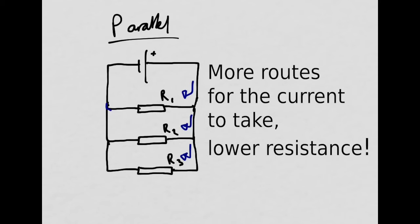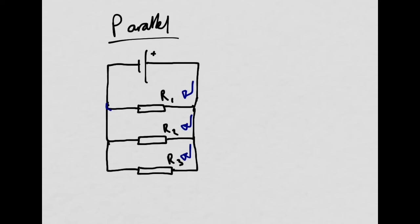That's quite tricky to get your head round, but think about it this way — there are more routes for the electricity to take. Imagine a main road with lots of cars travelling through it, and you decide to open up a bypass. That's exactly what we're doing here: opening up another route for the electrons to take. Therefore you can get more of them through at any one time, so resistance goes down and the total current from the battery goes up.